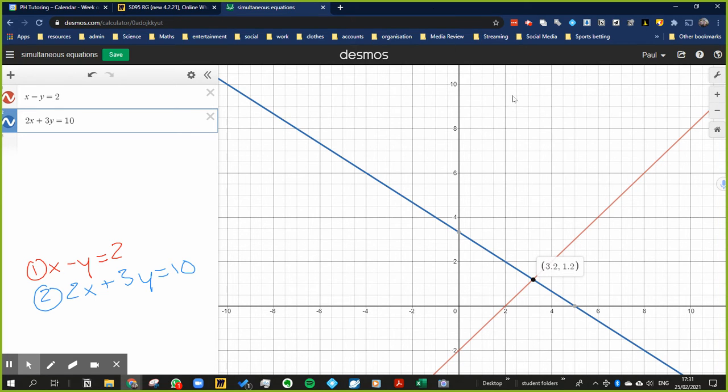Now we can check to see if this is correct. I can just write that down, so we've got 3.2, 1.2. So it looks like x is equal to 3.2 and y is equal to 1.2.